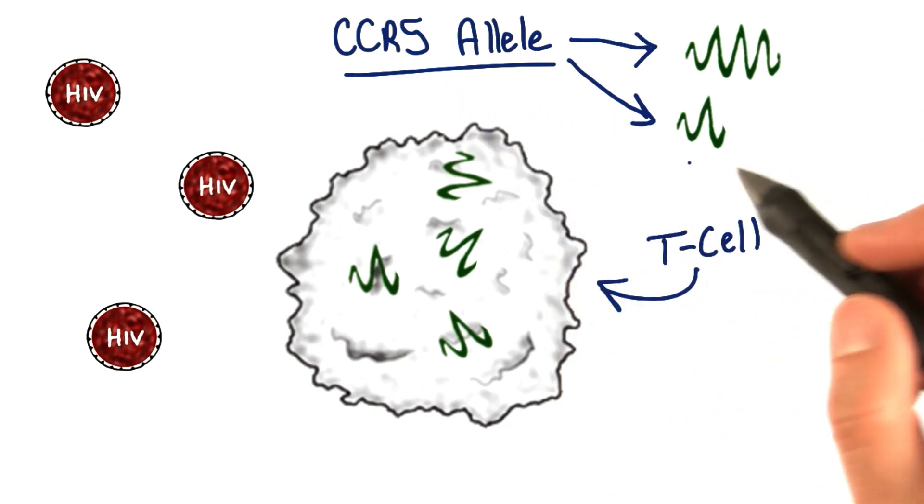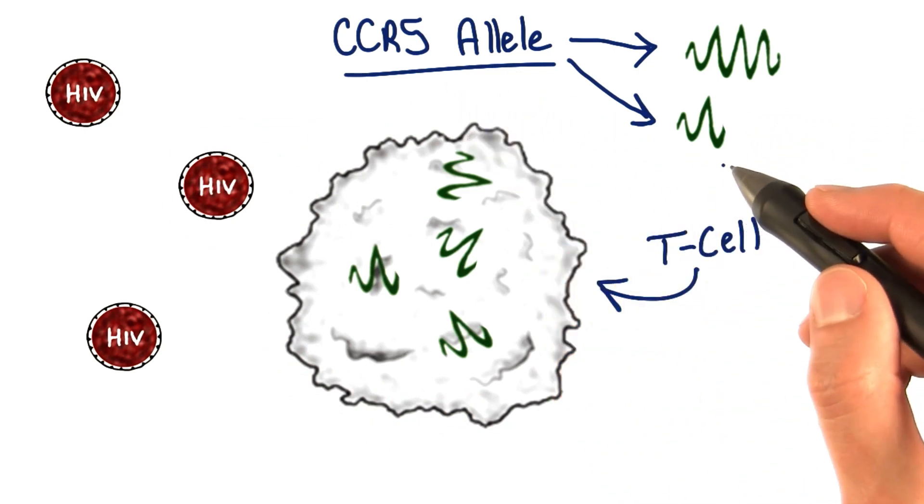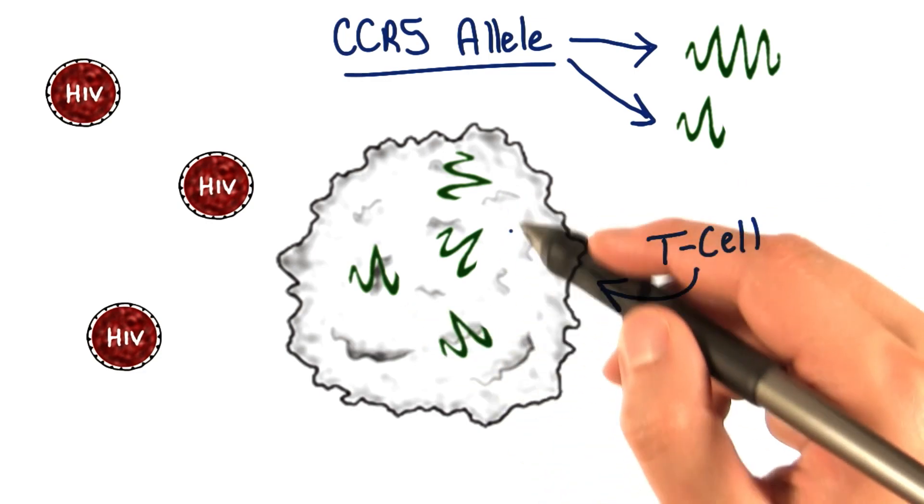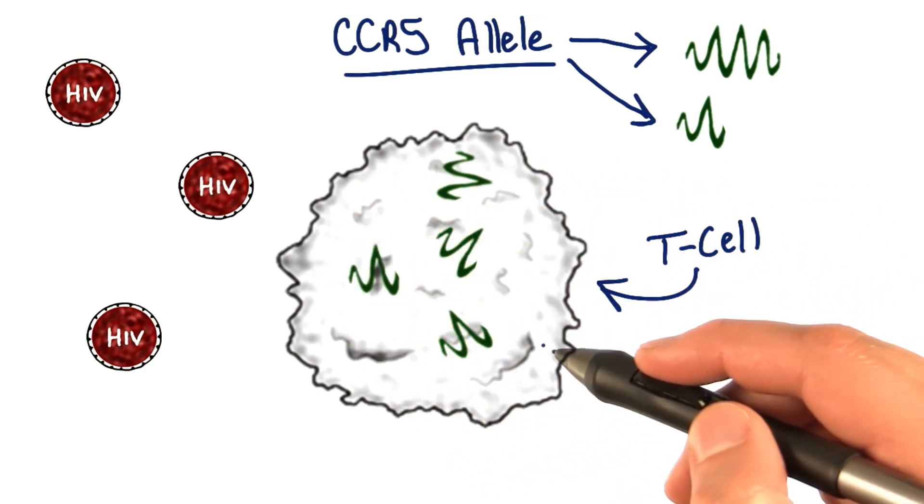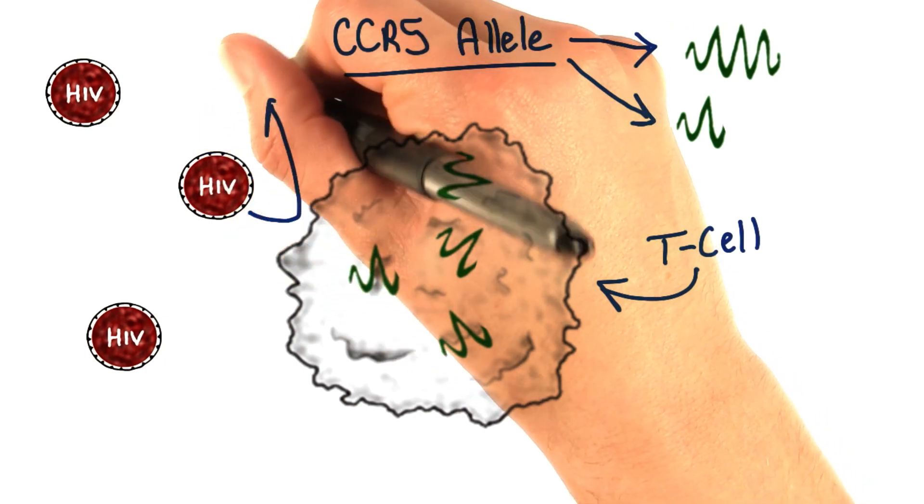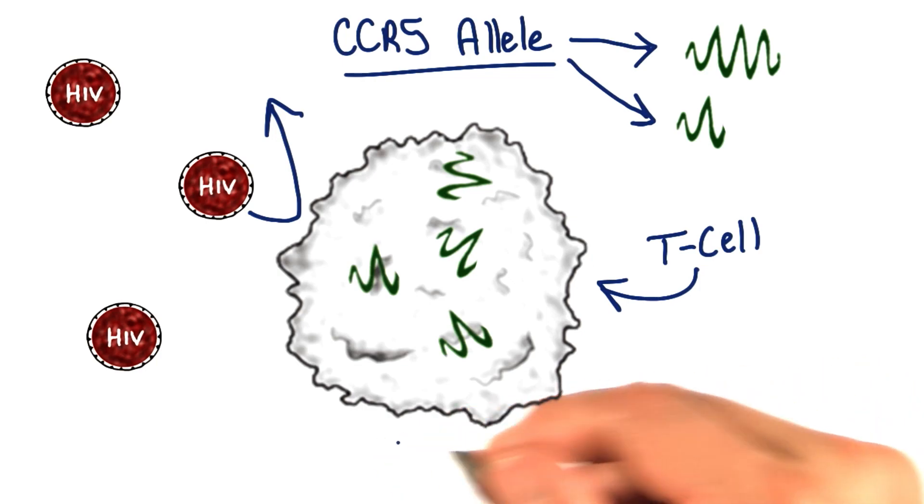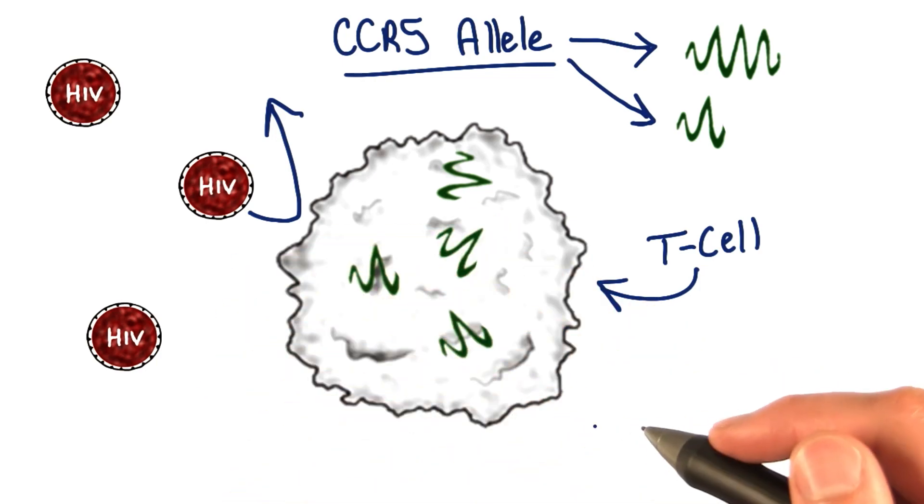However, there's an allele of CCR5 that creates a very dysfunctional version of the protein, rendering it pretty much non-functional, and it can't even get to the cell surface of T cells. Without that CCR5 protein, the HIV simply can't get into the T cells. The T cells are thus resistant to HIV infection.